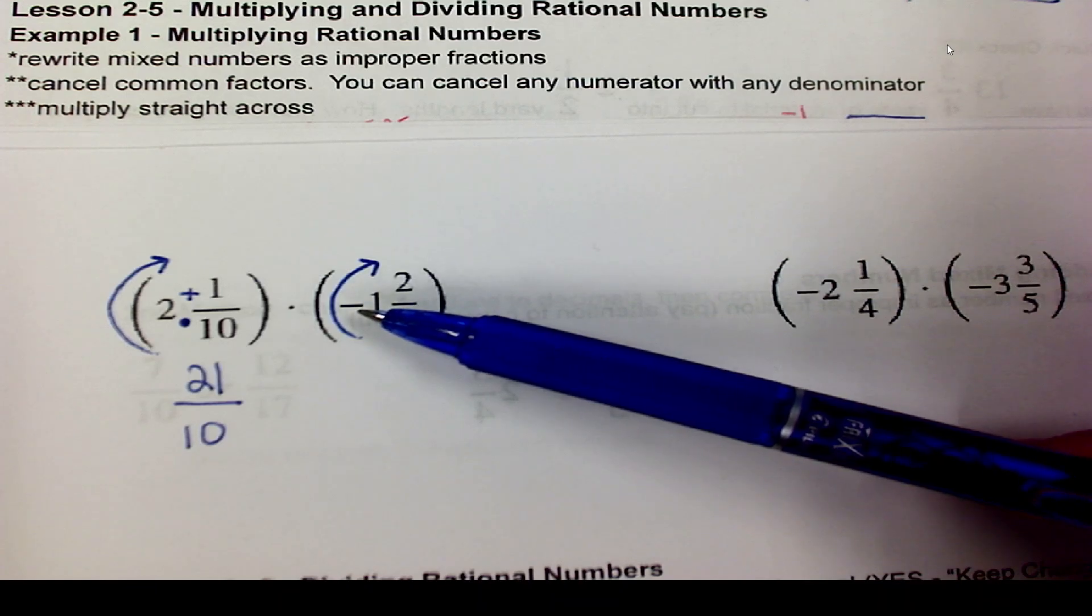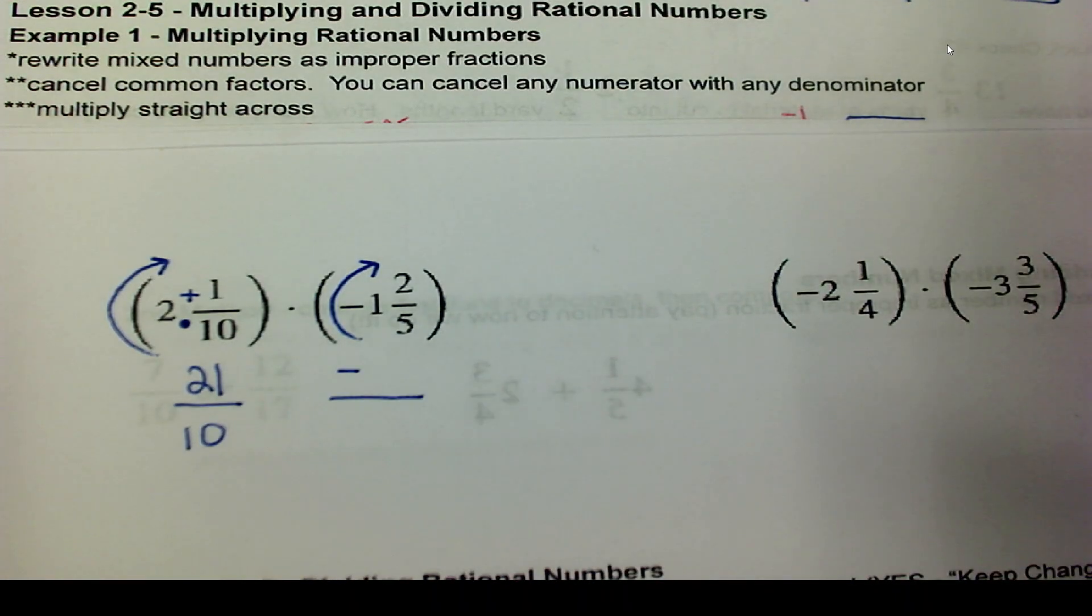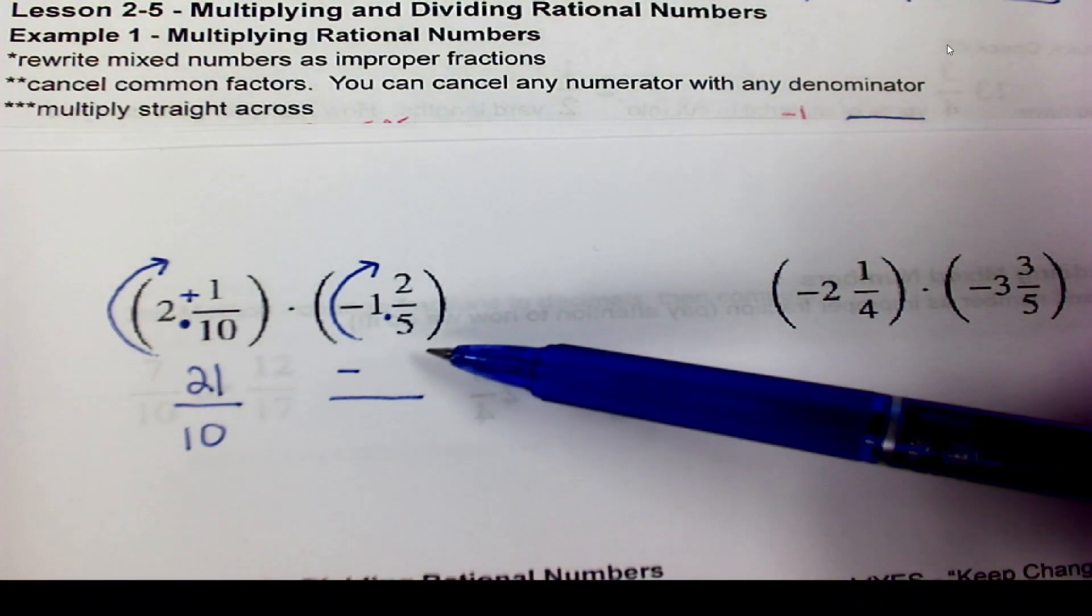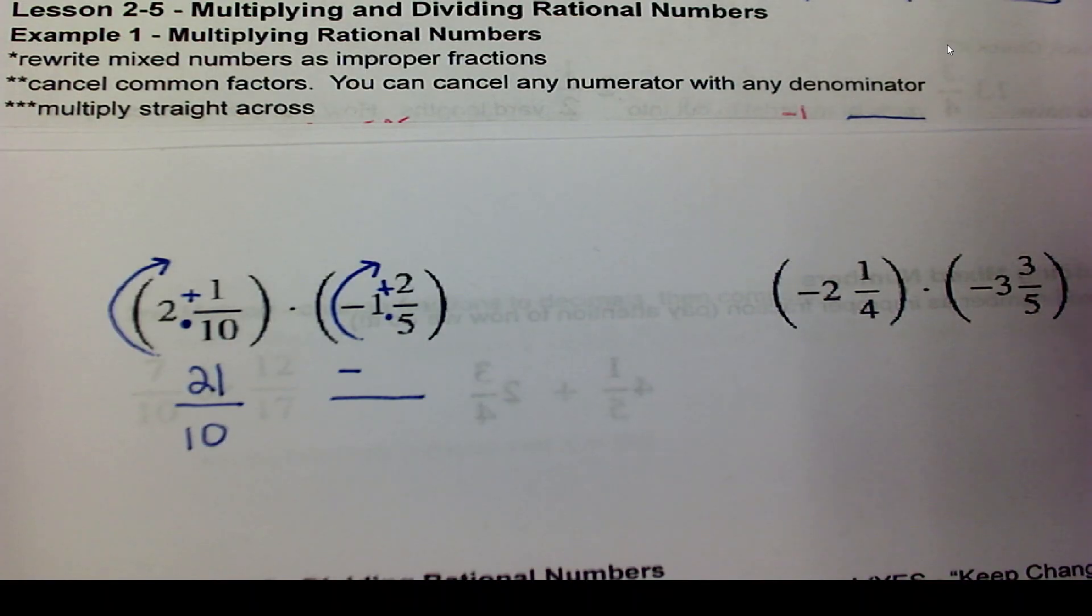This is a negative mixed number, so you might want to just go ahead and put the negative sign down here for your fraction. That way you won't forget it. Don't think of it as 5 times negative 1. Think of it as 5 times 1. So 5 times 1 is 5. 5 plus 2 to the 5 would then make it 7.